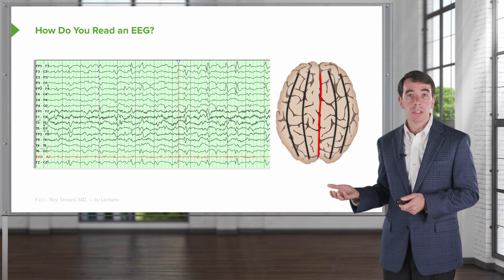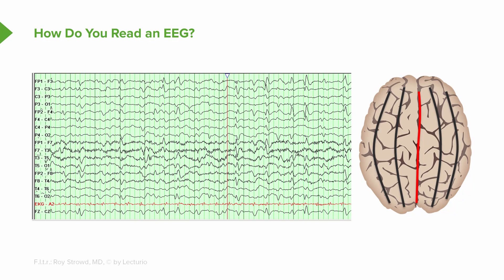This is what the EEG looks like — a bunch of squiggly lines on a page — and we can break those down to look into certain areas of the brain and see what's happening electrically. When we look at the numbers to the left, the odd numbers are the left side of the head: the ones, threes, fives, and sevens come from the left electrodes. The even numbers are the right side of the head: the twos, fours, sixes, and eights come from electrodes on the right side.